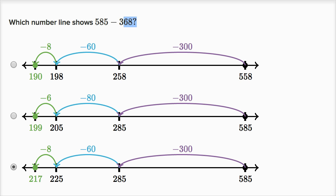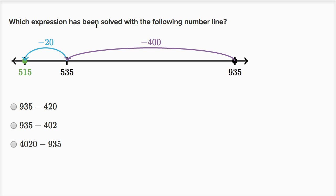Let's do one more example. Which expression has been solved with the following number line? So we're starting at 935, and then we're going to subtract 400, and then we're going to subtract 20. So this is 935 minus 420. That choice right over there.